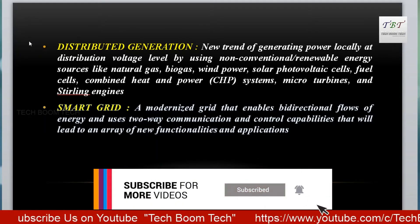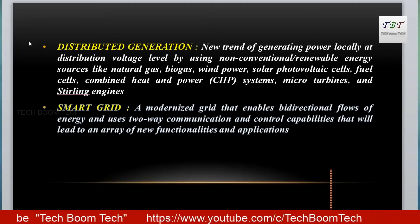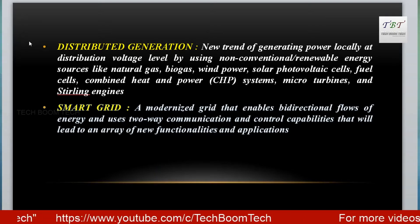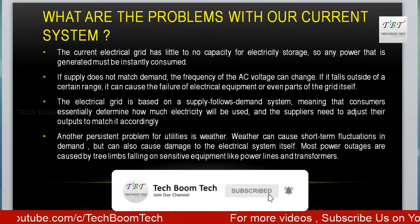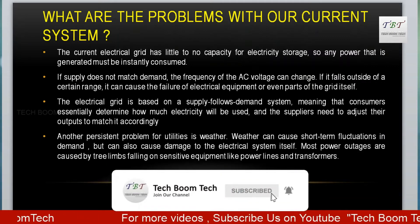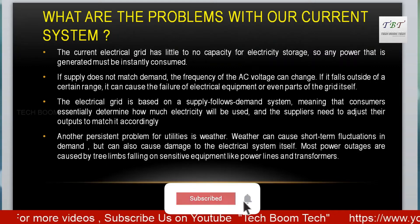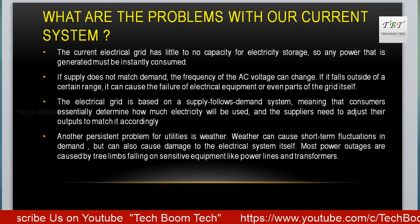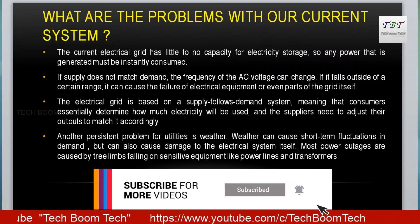Now the question is: why are these terms gaining a lot of importance in the past few years? Why does our conventional grid need to be smarter? What are the problems with our current system? The current electrical grid has less capacity for electricity storage, so any power that is generated must be instantly consumed. If supply does not match demand, the frequency of the AC voltage can change, and if it falls outside a certain range it can cause failure of electrical equipment or even parts of the grid itself.